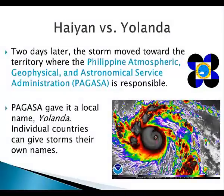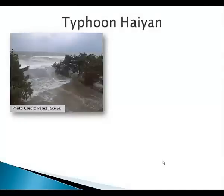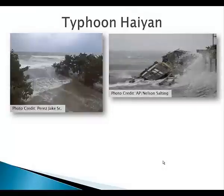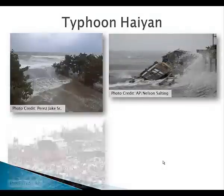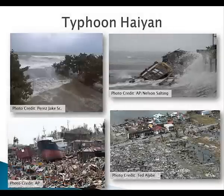The Philippine Atmospheric Geophysical and Astronomical Service decided to name the storm Yolanda, thinking that it would resonate more closely with the local population. Individual countries can give these storms their own names. However you name it — whether it was Haiyan or Yolanda — it was a super typhoon, an equivalent of a Category 5 in the U.S., and caused a devastating path of destruction through the Philippine nation.